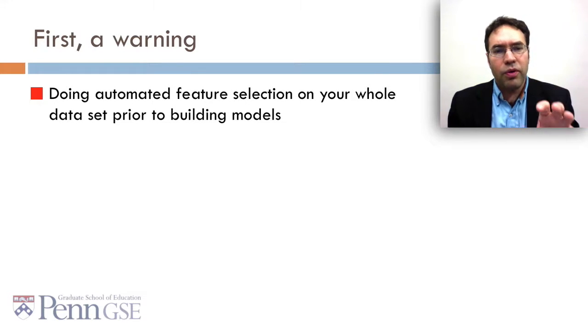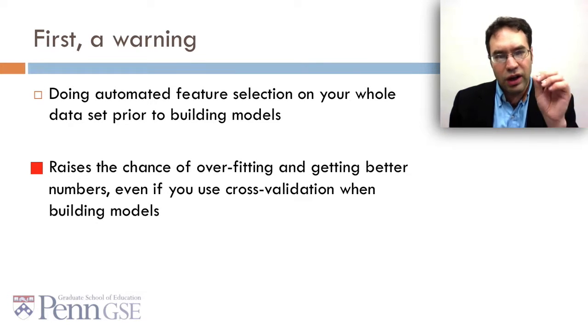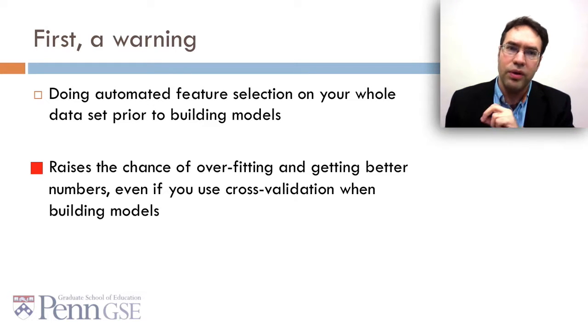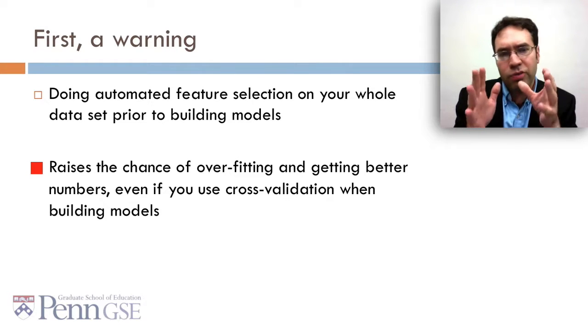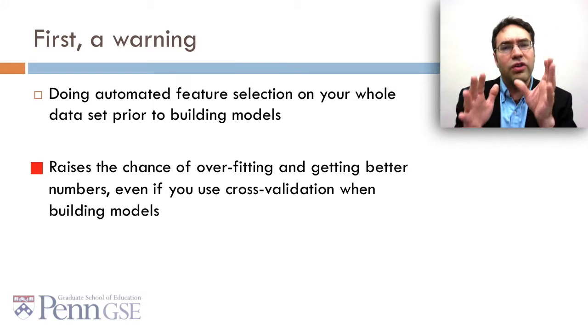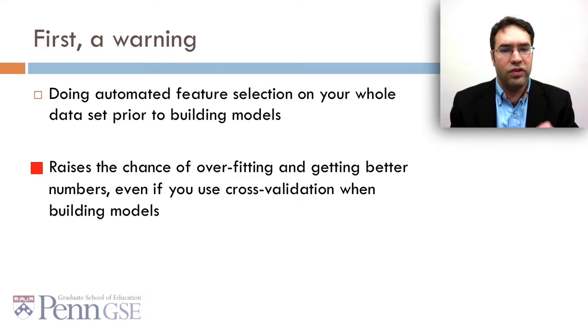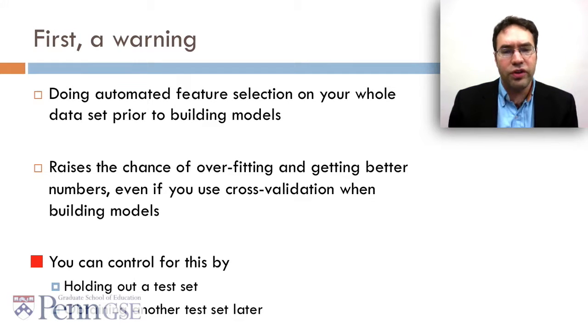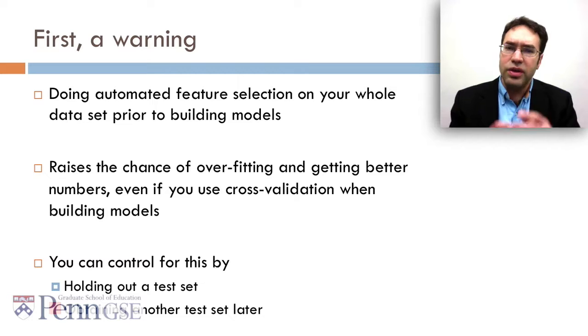First, before I talk about this more, let me give you a warning. Doing automated feature selection on your whole dataset prior to building models raises the chance of overfitting and getting better numbers even if you use cross-validation when building models, because you're making decisions about what variables to use, which is often considered part of the algorithmic process, before you even get to the algorithm and you're doing it in the whole dataset. So when you cross-validate, you're only cross-validating part of your process, you're not cross-validating your entire process. You can control for this by doing the standard things: holding out a test set or obtaining another test set later. It's not necessarily wrong to do this, it's just something you've got to keep in mind.